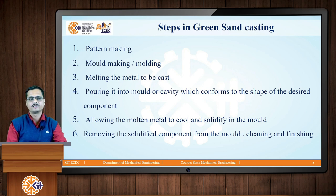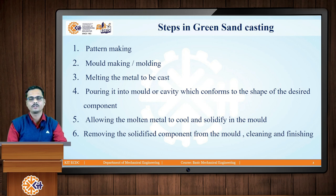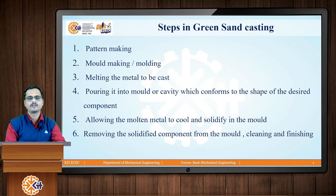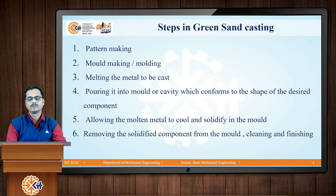So we can use these 6 steps to produce castings by green sand casting. Step 1 is pattern making, step 2 is mold making or molding, step 3 is melting, step 4 is pouring the molten metal into the mold cavity, step 5 is solidification — allowing the mold to cool and solidify — and step 6 is removing the solidified casting by breaking the mold and then cleaning and finishing it.